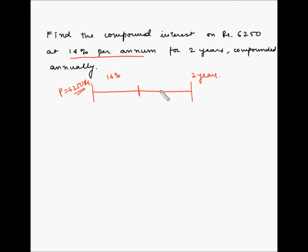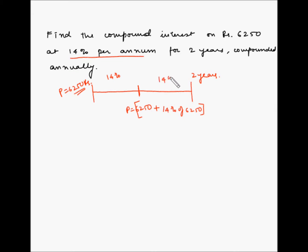Since this is compounded annually, for the second year the principal becomes the original principal of 6250 plus the interest obtained in the first year, which is 14% of 6250. On this new amount, another 14% interest is calculated. This is what is meant by compounded annually — at the end of every year, the interest is added to the principal at the beginning of that year, and the whole amount becomes the principal for the next year.